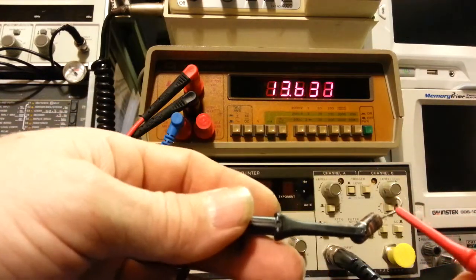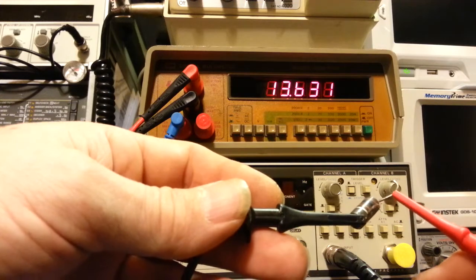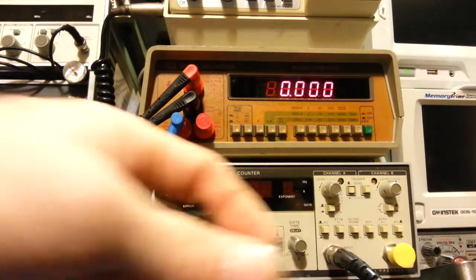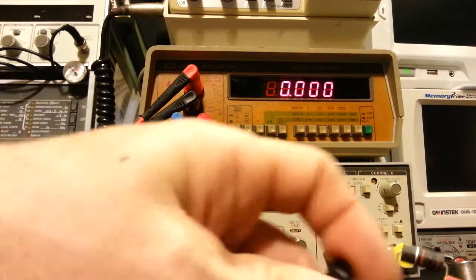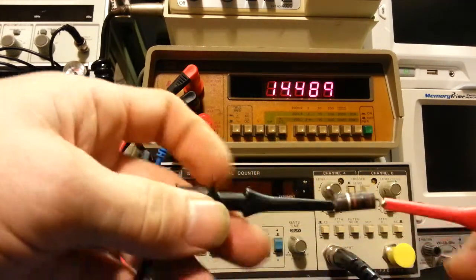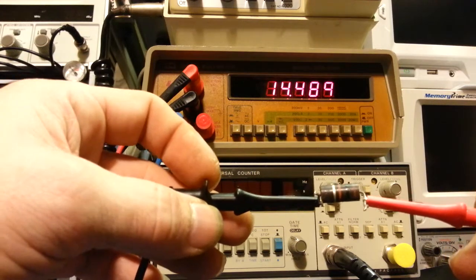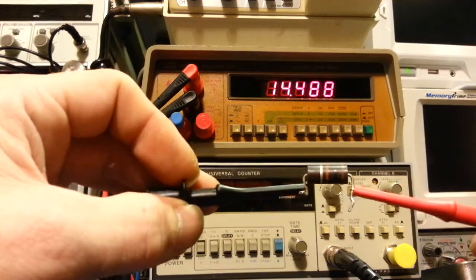Now we're getting to the holy smokes. 13,631 ohms. Definitely out of tolerance. And they get worse. 14,489. Remember, this is a 10,000 ohm resistor.